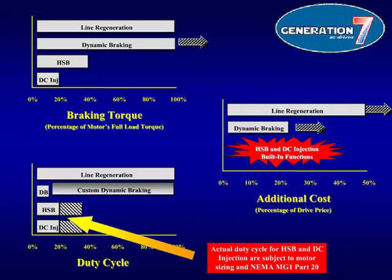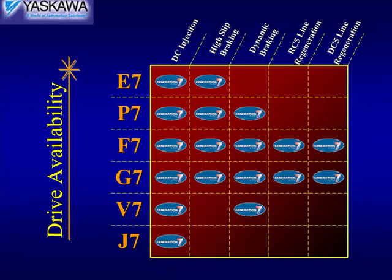Different drives have different braking method availabilities. This chart shows which braking methods are available in each drive. For high-end applications requiring line regeneration, only the F7 and G7 are equipped to handle the RC5 and DC5 regeneration modules. Dynamic braking is capable with the P7, F7, G7, and V7. DC injection is a built-in function available in all 7th generation drives. Once the braking method is determined, this chart, along with the control requirements of the application, will guide you in selecting the appropriate drive.